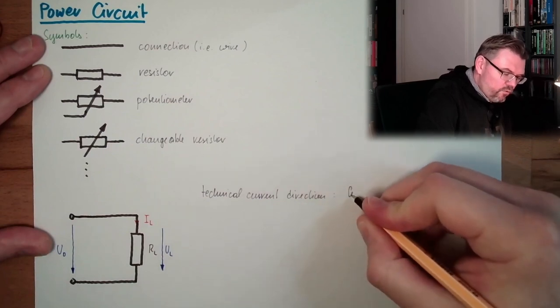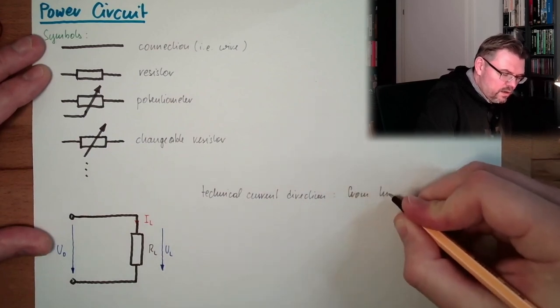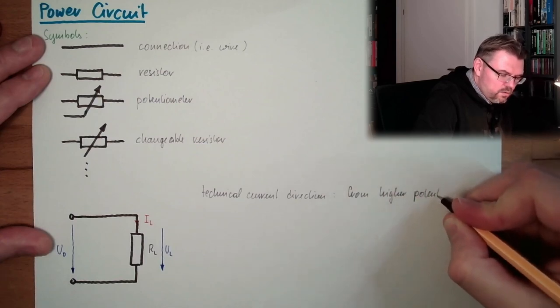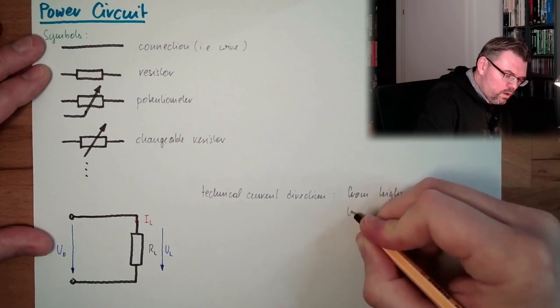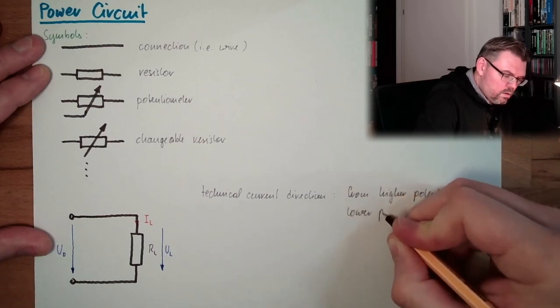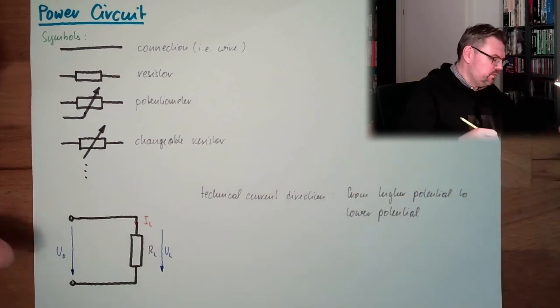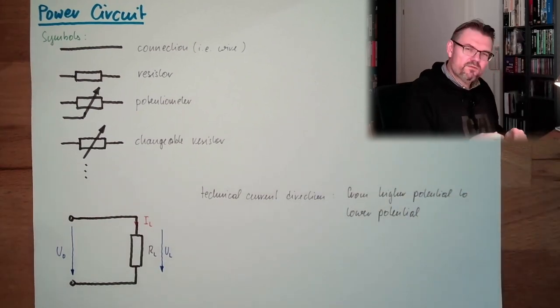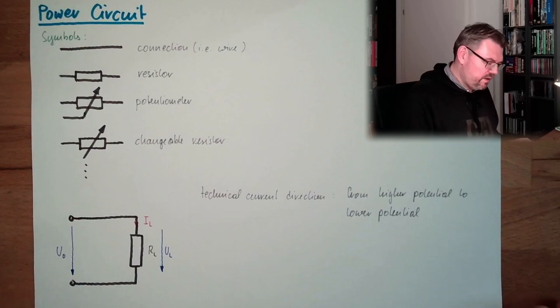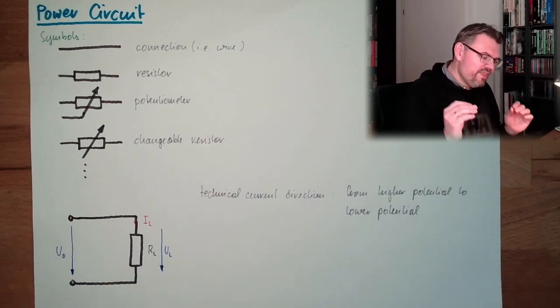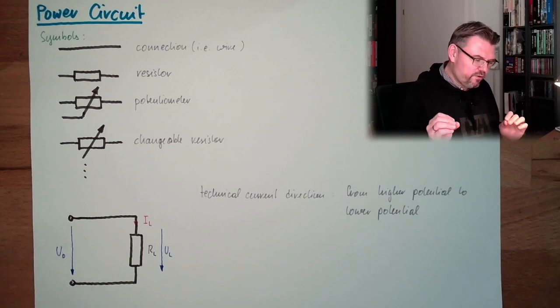What is reality? Well, we call this technical current direction. Technical current direction is from higher potential to lower potential. This is what we say - this is the current. The current is running from plus to minus. So from plus to minus, from higher potential to lower potential, that's the technical current direction.